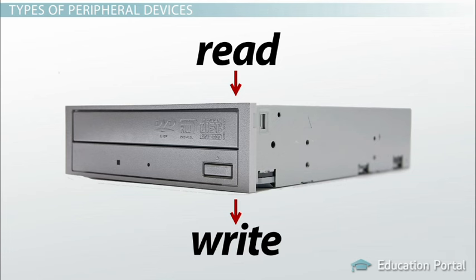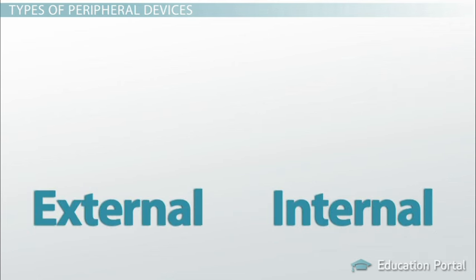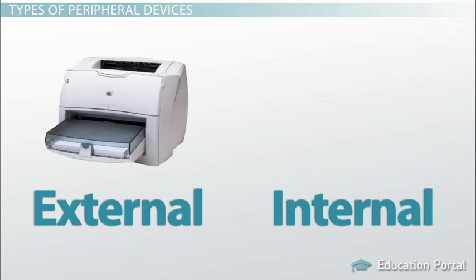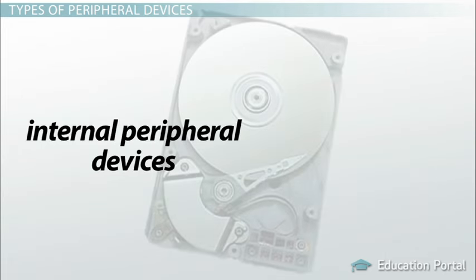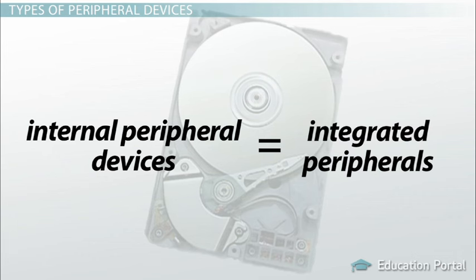Peripheral devices can be external or internal. For example, a printer is an external device that you connect using a cable, while an optical disk drive is typically located inside the computer case. Internal peripheral devices are also referred to as integrated peripherals. When most people refer to peripherals, they typically mean external ones.